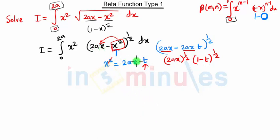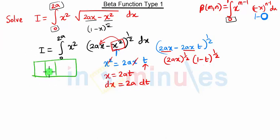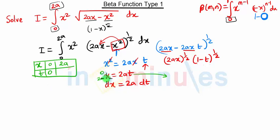Cancelling one x, we get x equal to 2a·t. Taking the derivative gives 2x equal to 2a dt, so dx equals a dt. Since we are changing the variable, our limits of integration will also change. x goes from 0 to 2a. When x equals 0, t equals 0. When x equals 2a, we get 2a equal to 2a·t, so t equals 1. Our limits of integration are now 0 to 1, which matches the Beta function formula.